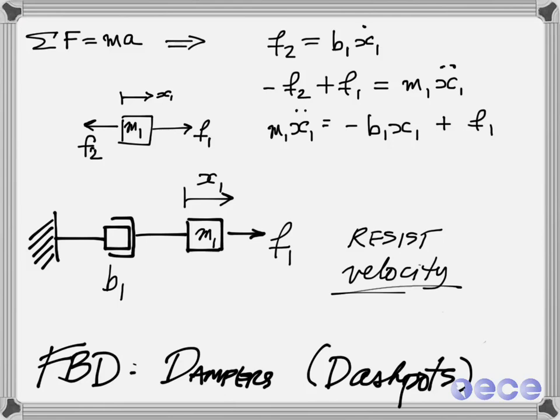So M1, X1 double dot, that's mass times acceleration, is minus F2, F2 being B1, X1 dot, and then F1 being the input force.